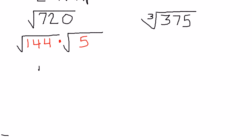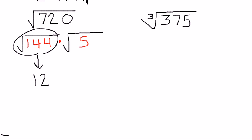What that does is it allows you to take the square root of the first part. So now we've got part of the 720 that we can take the square root of nicely, which is 12. And then the factor that we can't take the square root of nicely will just stay inside the radical sign. Our goal is really to get as much as possible outside that radical sign. That's the quick way.